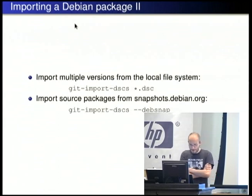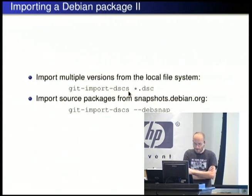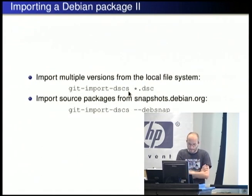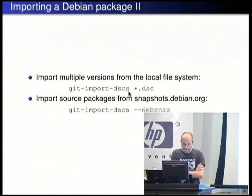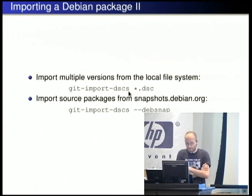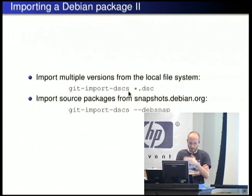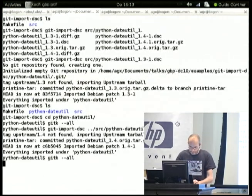There's also `git import-dscs` — note the extra S — used to import multiple DSCs. If you have the history of a package in source format, point it to all the DSC files and it sorts the version numbers using `dpkg --compare-versions` and imports them one by one, giving you the whole package history. You can also pass `--debsnap`, which uses devscripts' devsnap to go to snapshots.org, download all snapshots it finds, and import them — very handy when taking over a package from someone who didn't use version control.